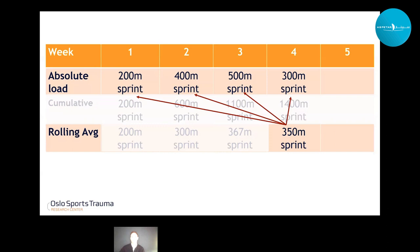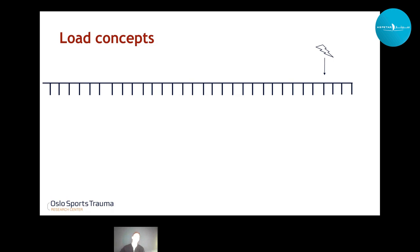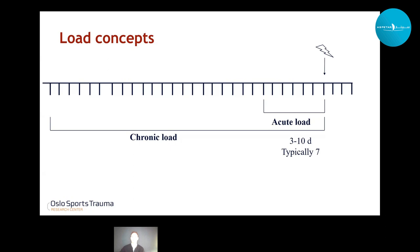It doesn't have to be a week. In the literature we've seen many different time periods. The typically shorter period is called the acute load, ranging from three days up to ten — most typically seven days. And we have the chronic load, which is a longer time period, obviously more than ten days. Most typically it's 21 or 28 days — three or four weeks.